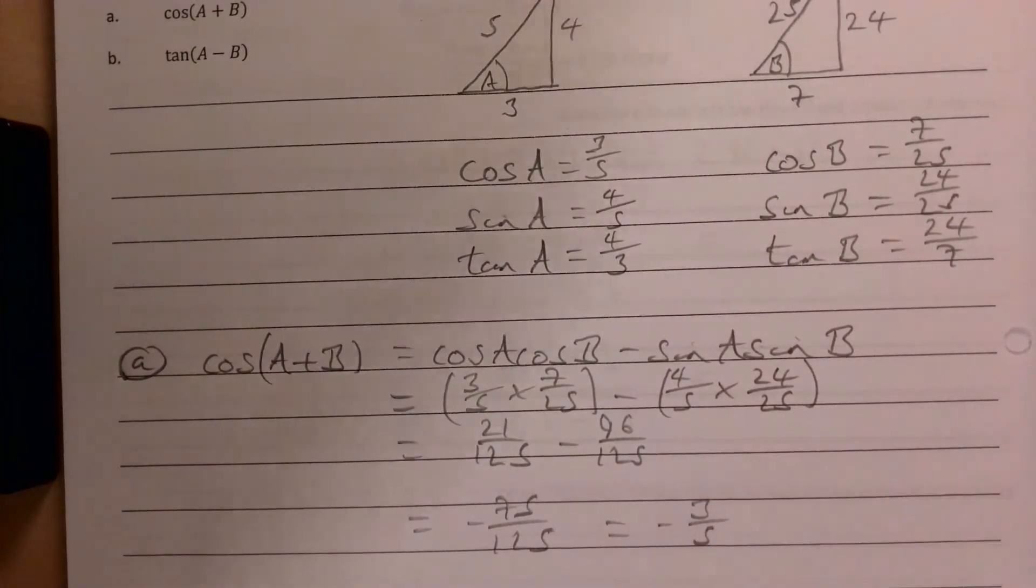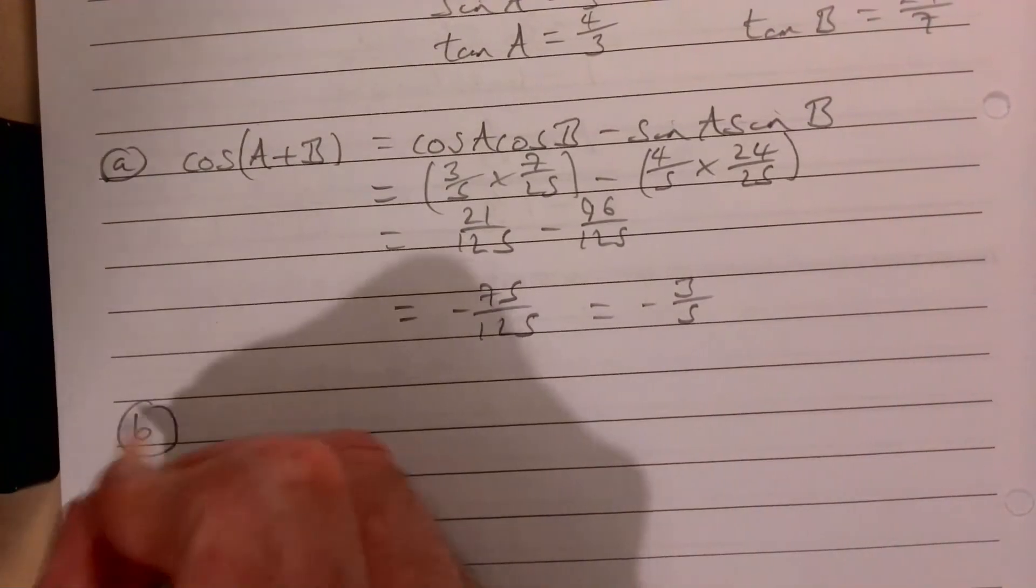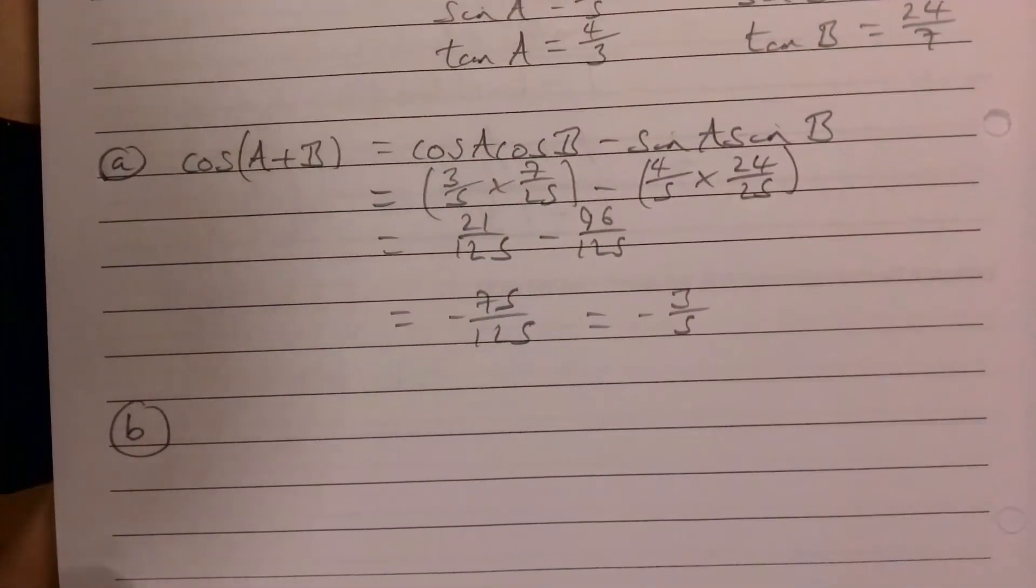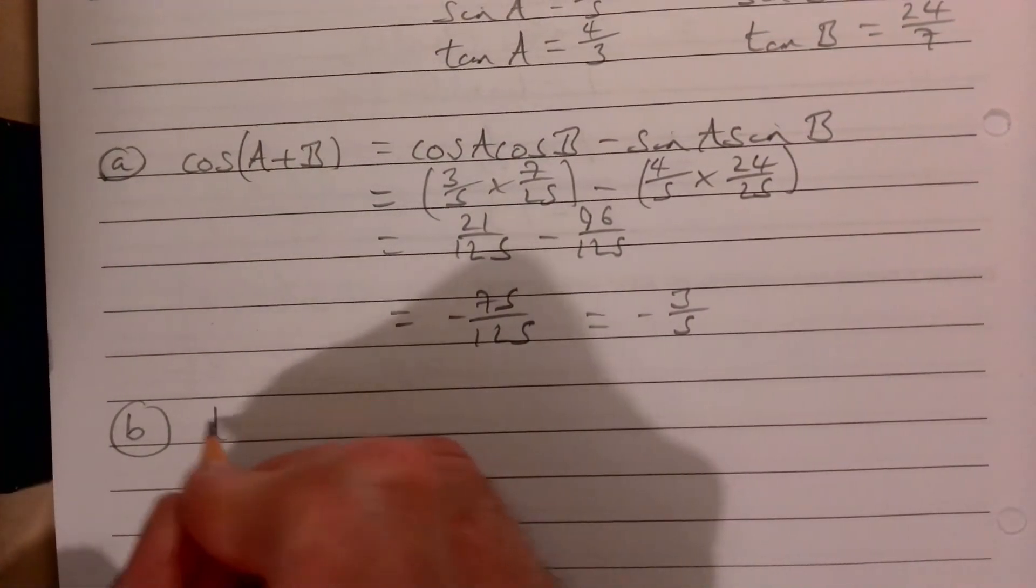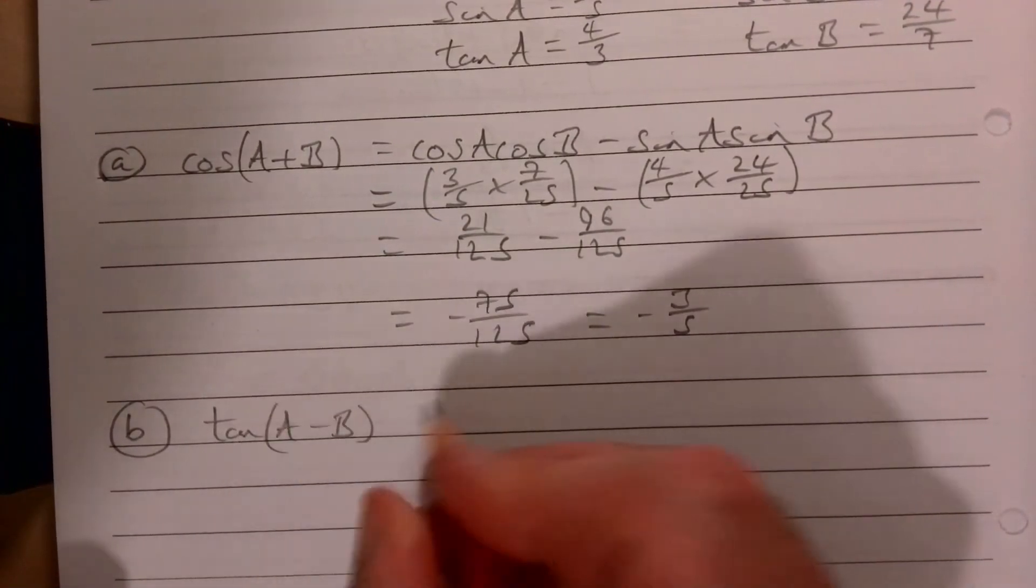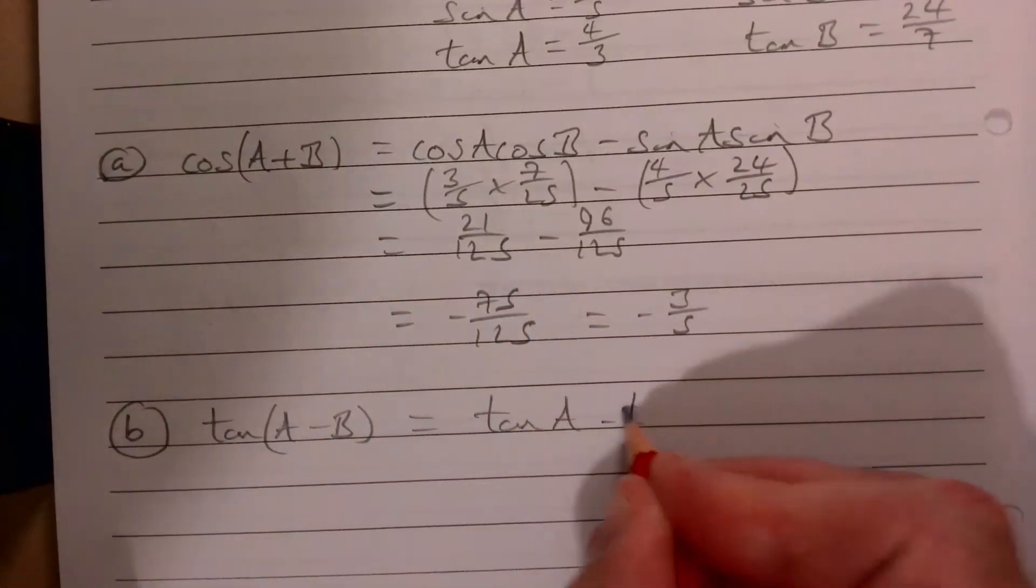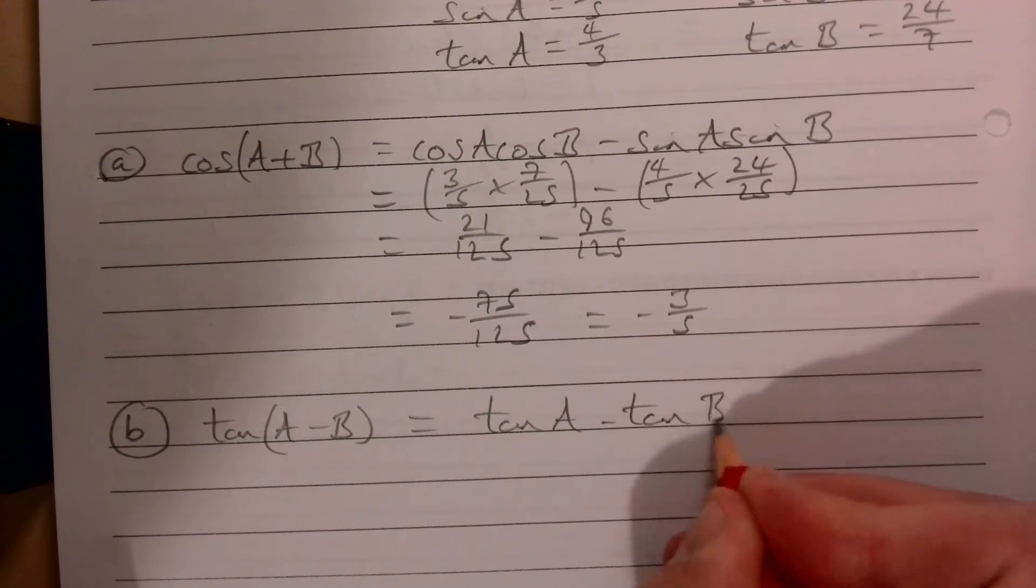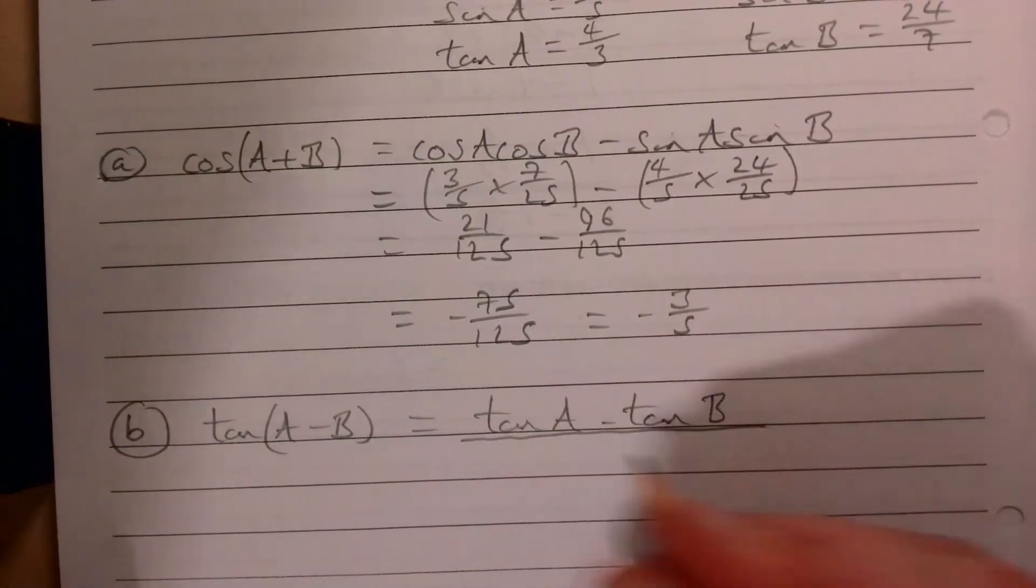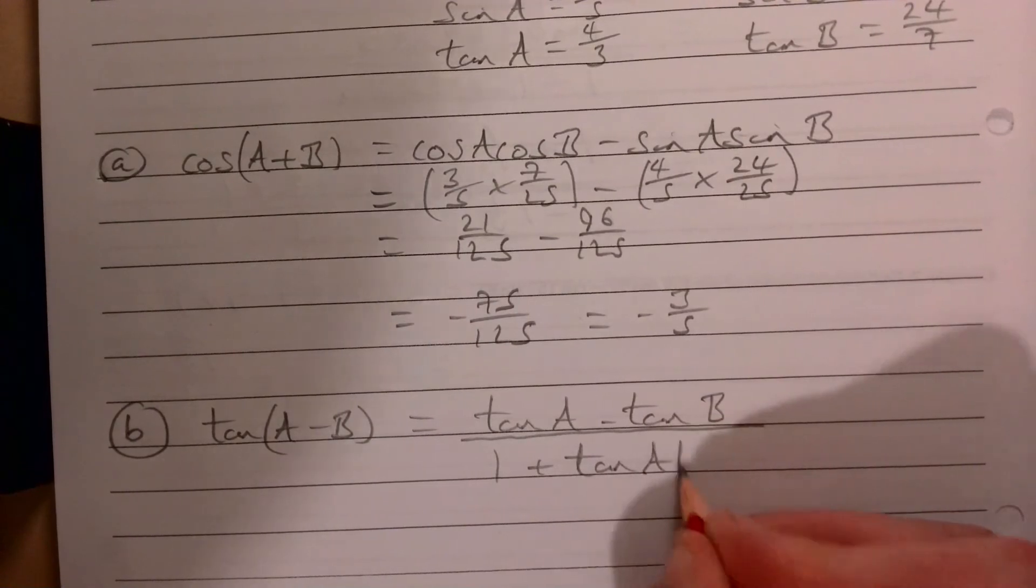That gives us -75/125, which cancels down nicely into -3/5. And for part b, it is tan(A-B).